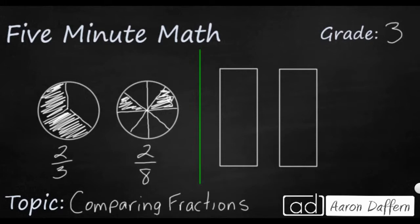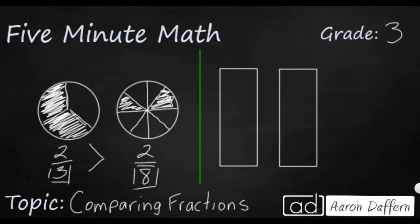We have two fractions we can compare simply because the numerators are the same. Take a look at two thirds over on the left — you can see that those pieces are much larger than the pieces on the right. The bigger the denominator, the smaller the pieces. These thirds are much bigger chunks than these eighths, because as the denominator gets bigger, each piece gets smaller — I take the same whole and break it into more and more pieces. So two thirds is greater than two eighths.